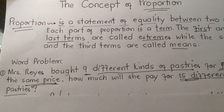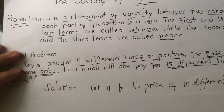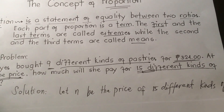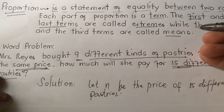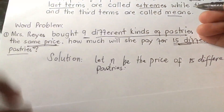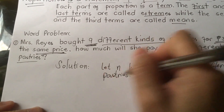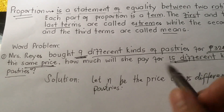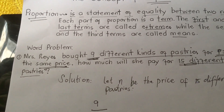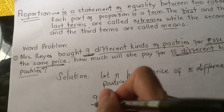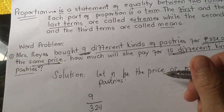To solve this problem, let n be the price of 15 different kinds of pastries. So we write 9 over 324 equal to 15 over n. This is what I call a short method — a very good technique on how to solve proportion.